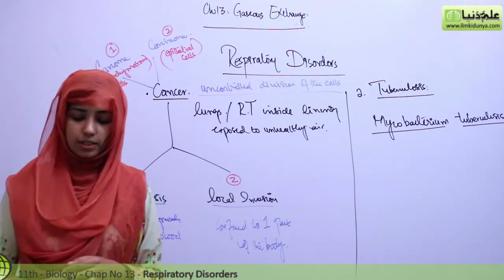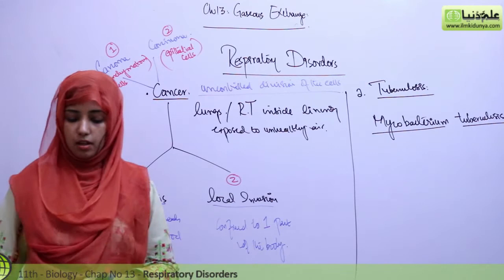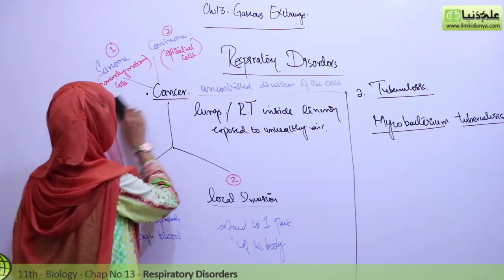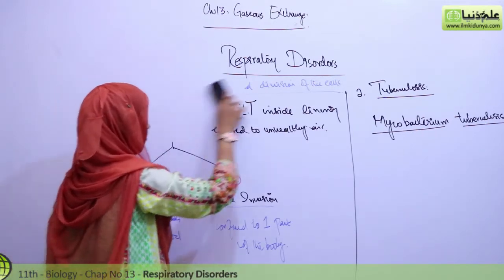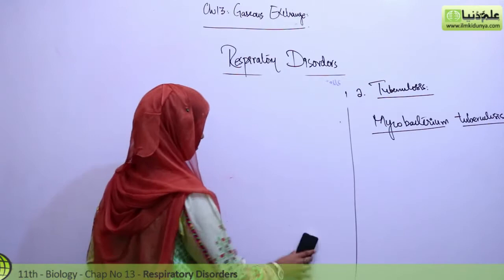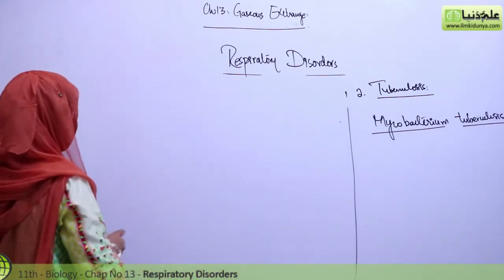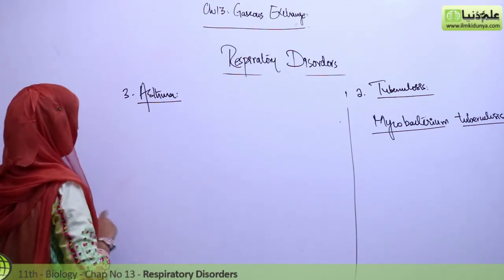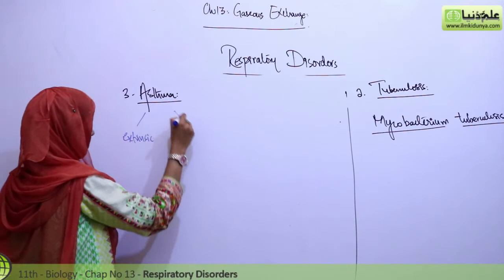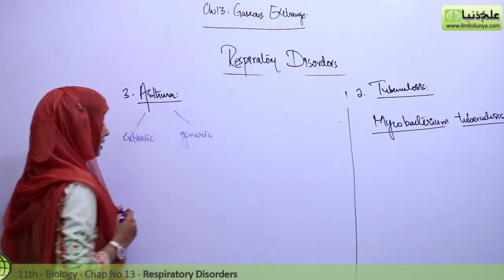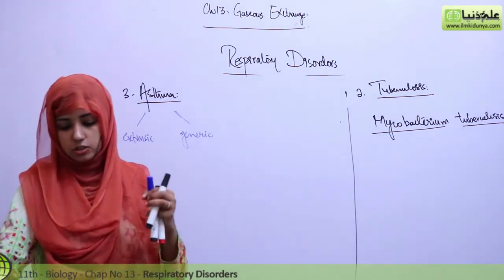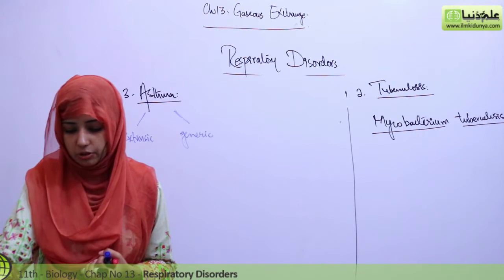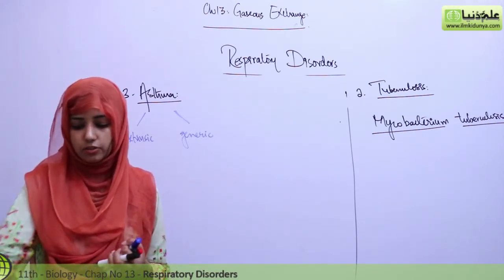After tuberculosis, we have asthma. Asthma can be either intrinsic or extrinsic. Asthma is a serious respiratory disorder characterized by paroxysms of difficult breathing. Extrinsic asthma is caused by external conditions such as allergic reactions to pollens, spores, cold, humidity, or pollution. Intrinsic asthma is genetic and runs in families. It involves severe paroxysms of difficult breathing usually followed by a period of complete relief.